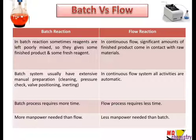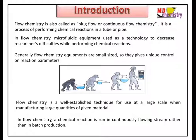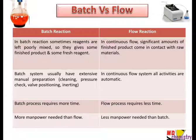Batch systems usually have extensive manual preparation — cleaning, pressure checks, wall positioning, and inert atmosphere checks. In continuous flow, all activities are automatic. At the start of the reaction, you check cleaning, pressure, temperature, and inert atmosphere, and after completion you get the final product — no need to monitor the reaction in between. Batch process requires more time and more manpower; flow process requires less time and less manpower.